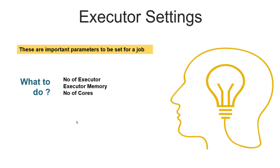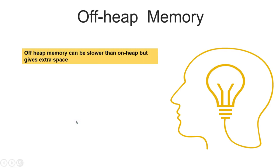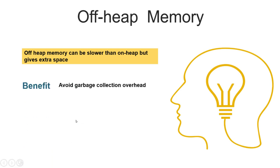Another technique is utilizing off-heap memory. As covered in the memory management video, off-heap memory is slightly slower than on-heap memory, but it gives us extra space beyond our on-heap limit and is completely free from garbage collection overhead. Avoiding GC overhead entirely in off-heap storage also helps in performance.